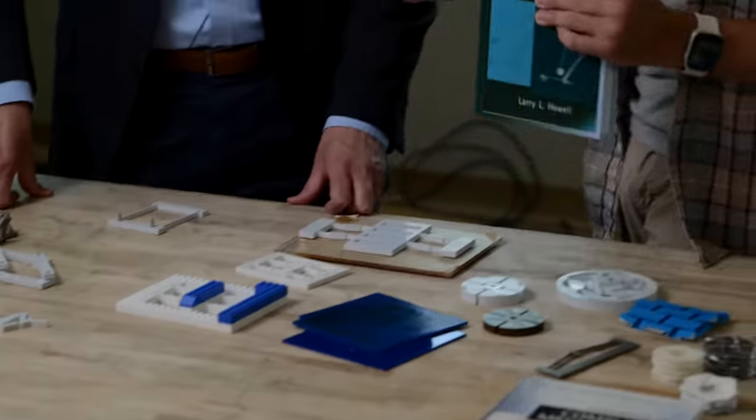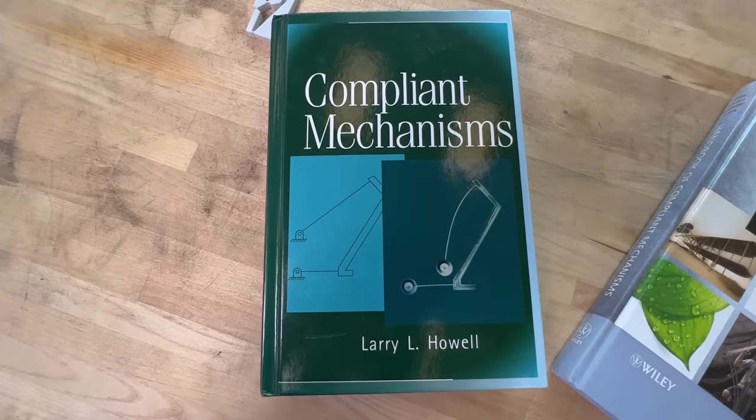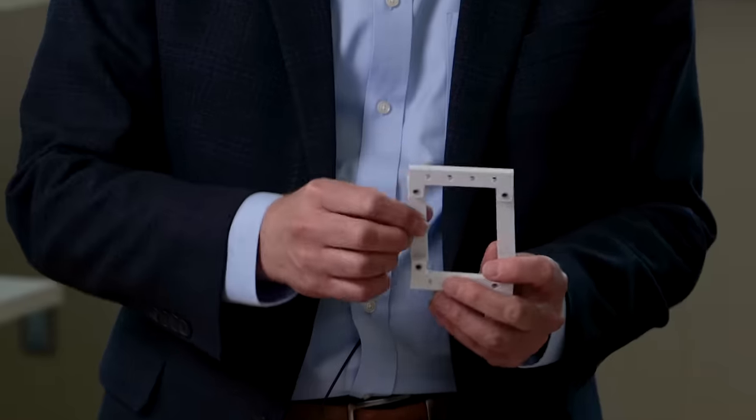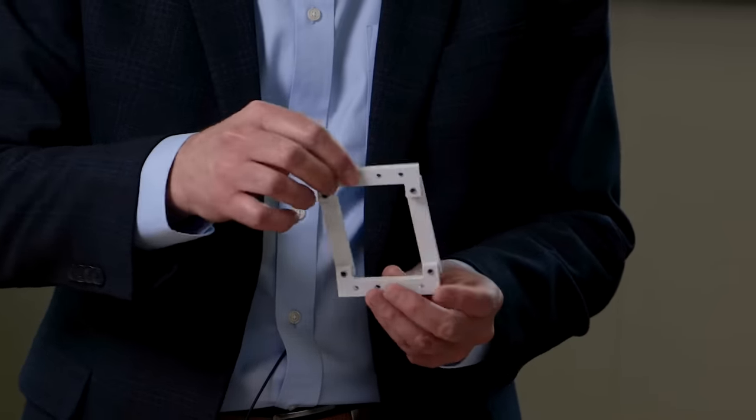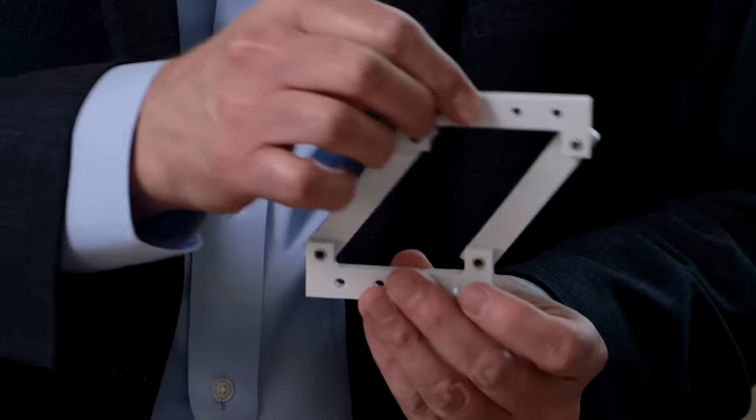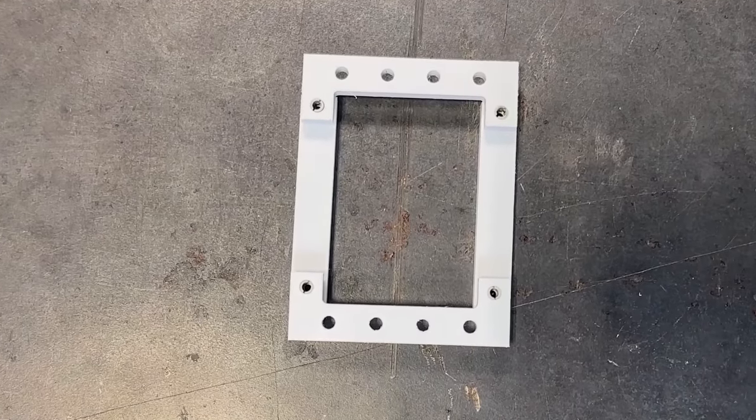This is the book on compliant mechanisms. Well, I think so, but I may be biased. And he's as humble as he is biased, because this is hands down the number one cited book in this field. A regular mechanism is going to have rigid links and something like hinges to make it move something like this. And this is a very common type of mechanism called a four-bar linkage. And Dr. Howell explained how you can make that out of only one part.